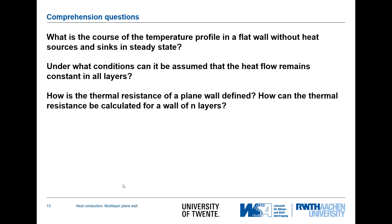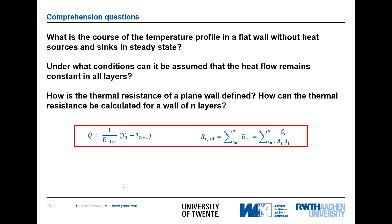Finally, how is the thermal resistance of a plane wall defined, and how can it be calculated for a wall of N layers? The heat flux equals one over the total resistance times the driving potential, and the total resistance in a series network is the sum of all individual resistances, equal to the sum of delta_i divided by A_i times lambda_i. Note that increasing thermal conductivity reduces thermal resistance, and increasing wall thickness increases resistance. With that, thank you for your attention — have a nice day and see you in the next video.